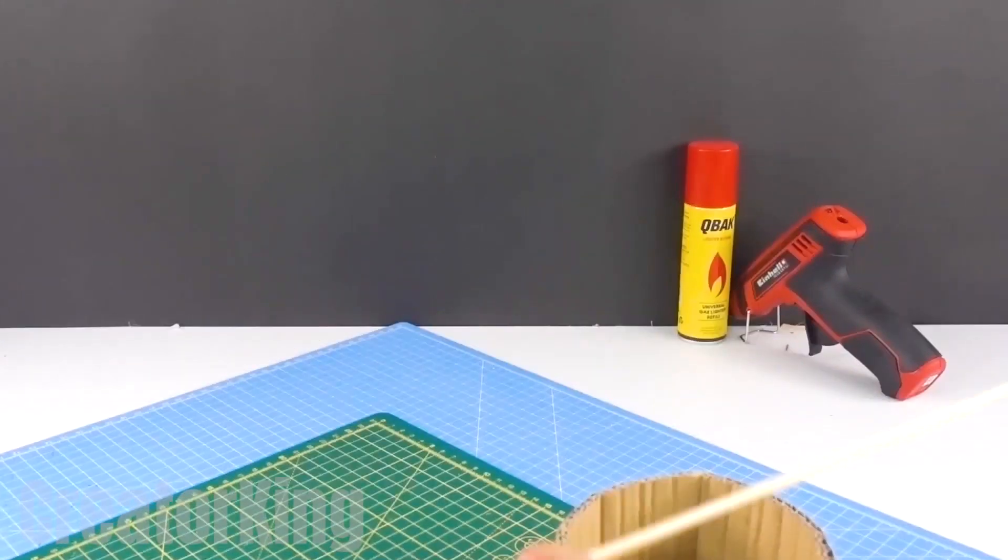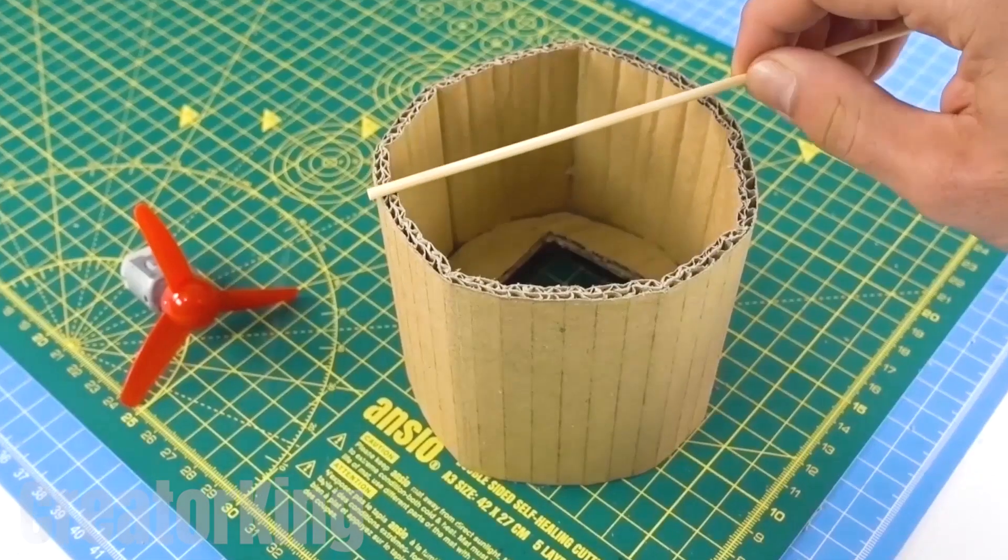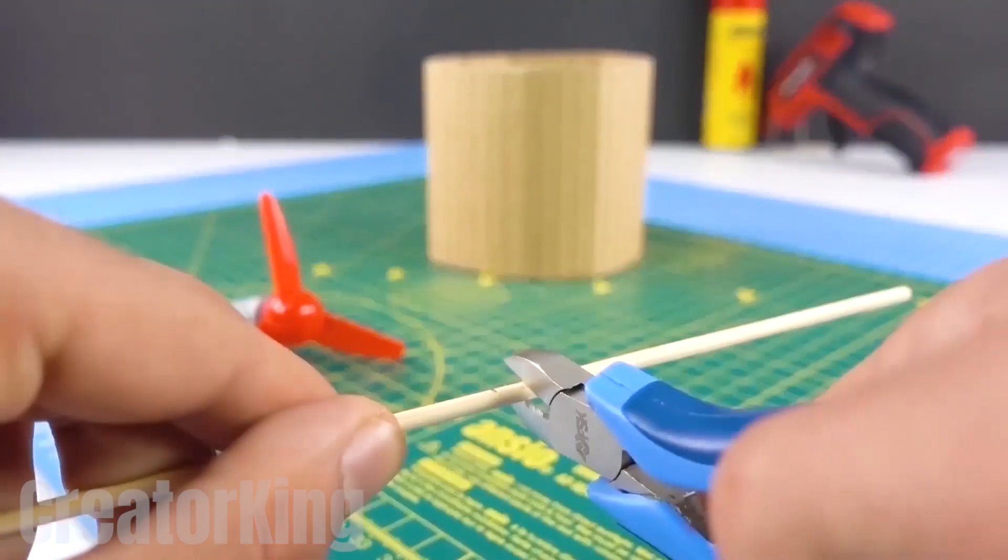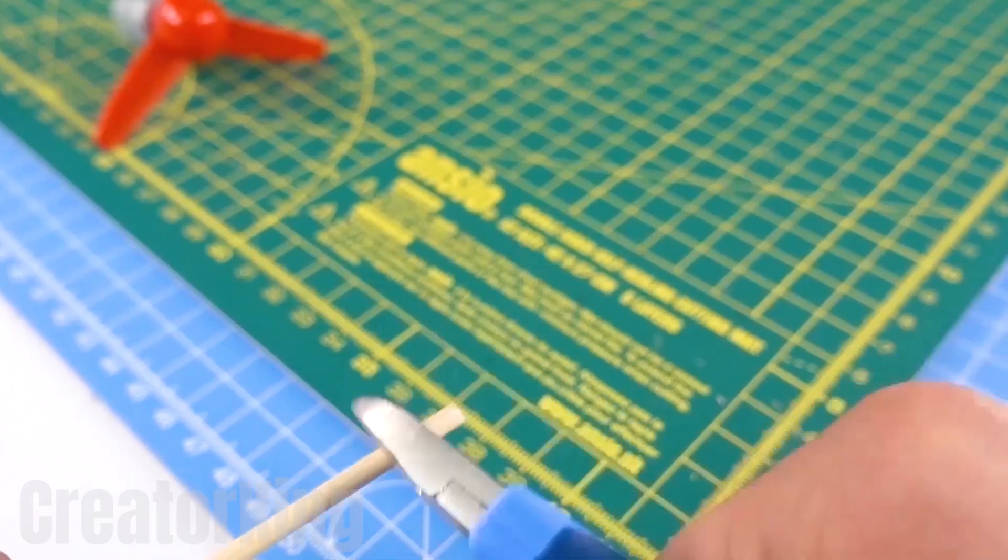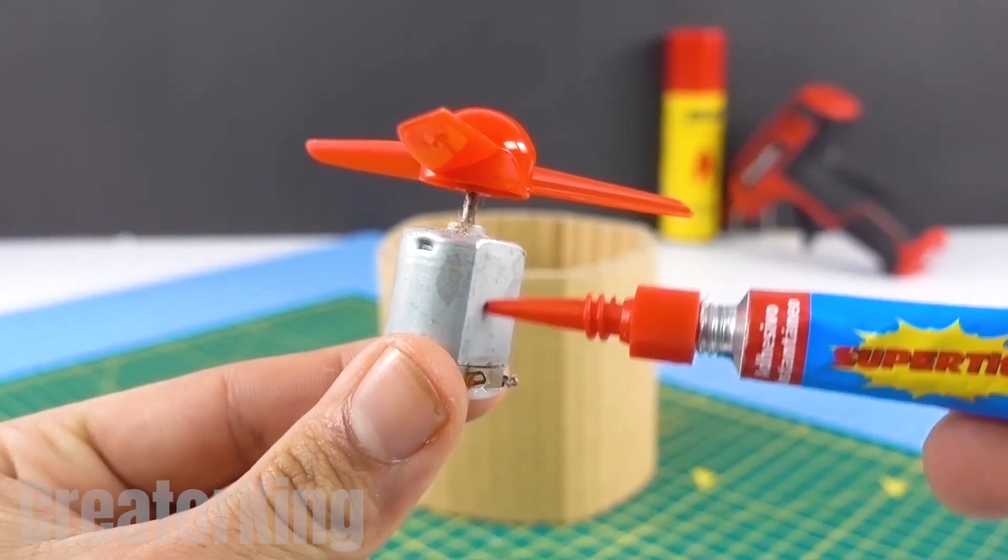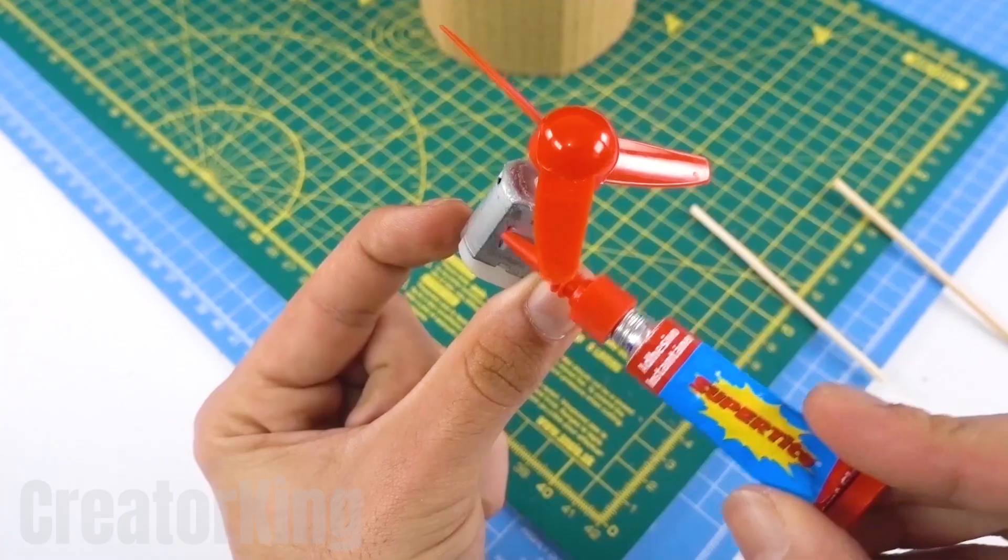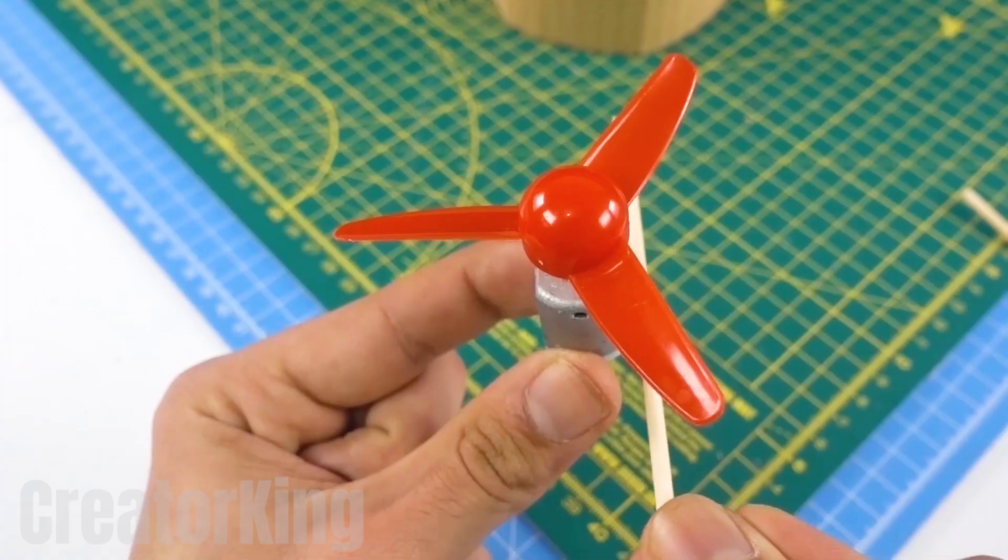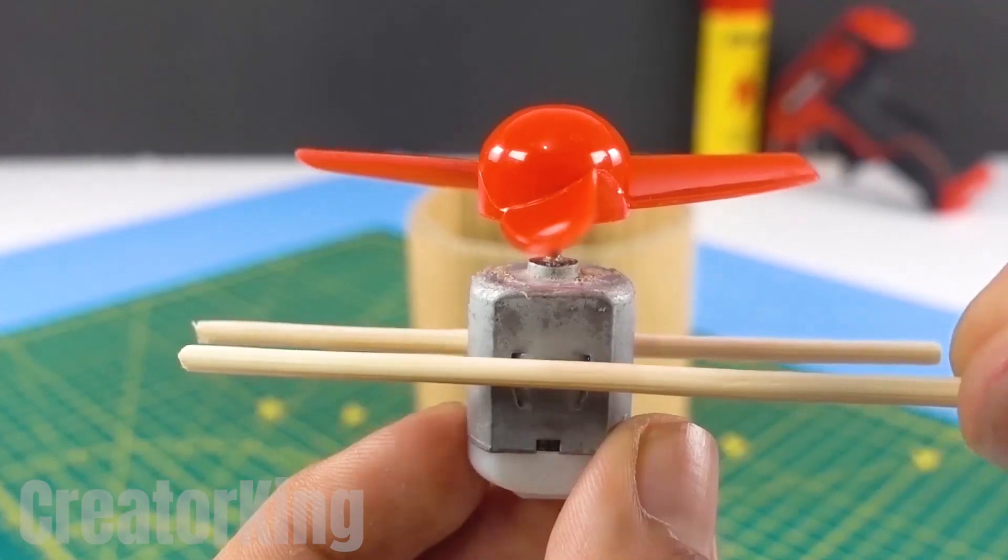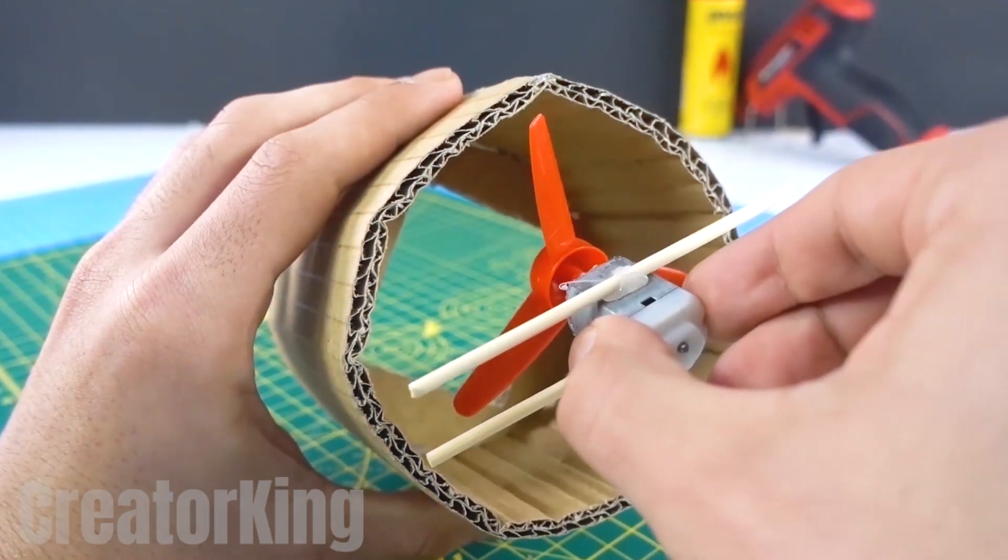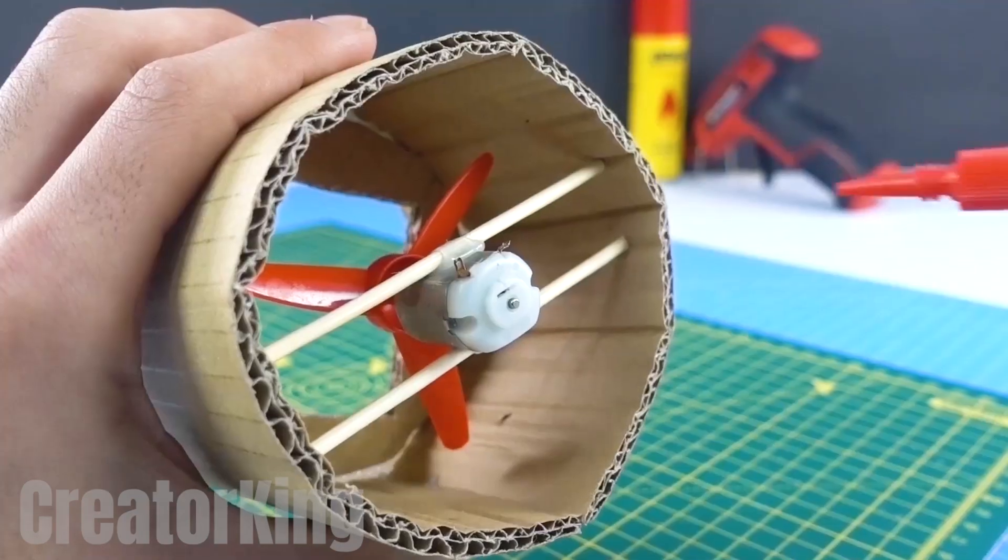To measure the wooden stick, place it on the cardboard tube and make the mark to identify where the cutting pliers will do their work. Place glue on both sides of the engines and join the two sticks we just cut. Place the whole thing inside the cardboard tube and secure it with some super glue.